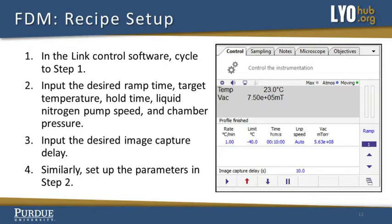Recipe setup. In the link control software, cycle to step 1 in the recipe list by clicking the arrows on the right hand side of the recipe window.